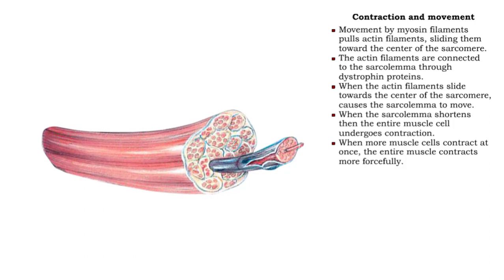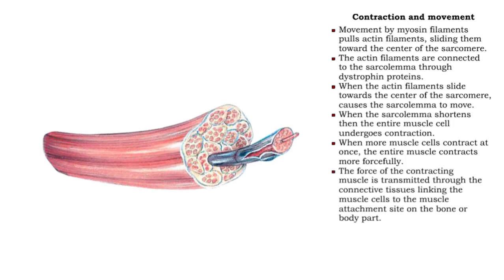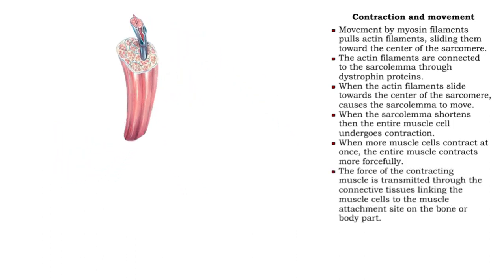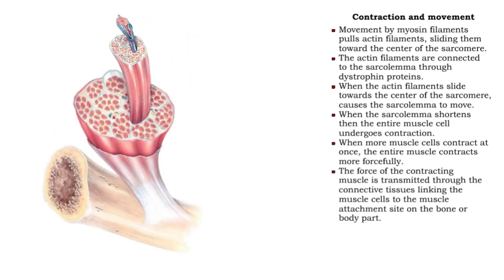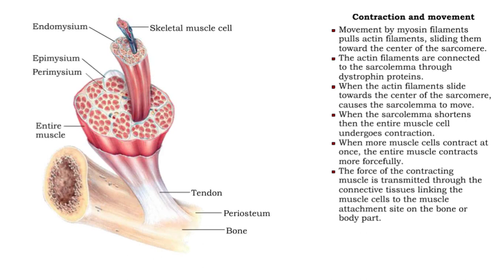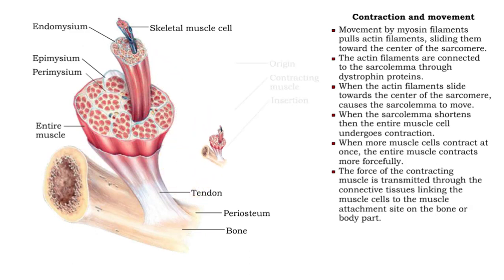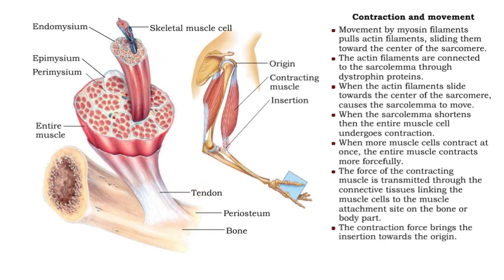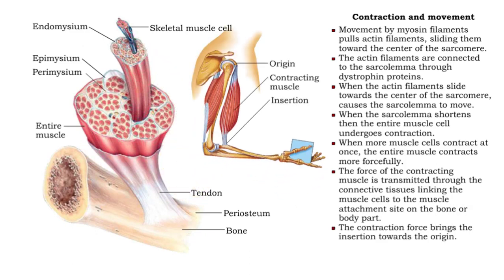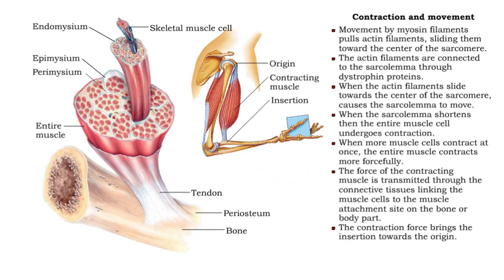The force of the contracting muscle is transmitted through the connective tissues of the skeletal muscle to the periosteum of a bone. The contraction proceeds in a manner that brings the insertion toward the origin.